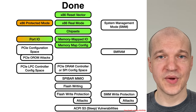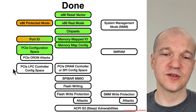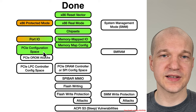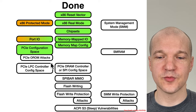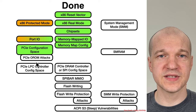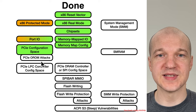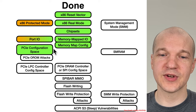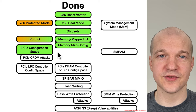So with that, we're back to our map and we are done with the PCI configuration address space. We are continuing on towards flash write protection, but we're going to take a quick pit stop at PCI option ROM attacks, because now we know everything we need to know to understand how those work.